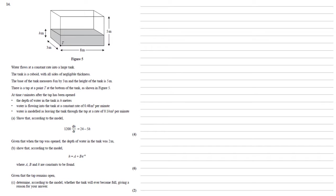Water flows at a constant rate into a large tank. The tank is a cuboid with all sides of negligible thickness. The base of the tank measures 8 metres by 3 metres, and the height of the tank is 5 metres. There's a tap at a point T at the bottom of the tank, as shown in Figure 5. At time t minutes after the tap has been opened, the depth of water in the tank is h metres, water is flowing into the tank at a constant rate of 0.48 cubic metres per minute, and the water is modeled as leaving the tank through the tap at a rate of 0.1h cubic metres per minute.